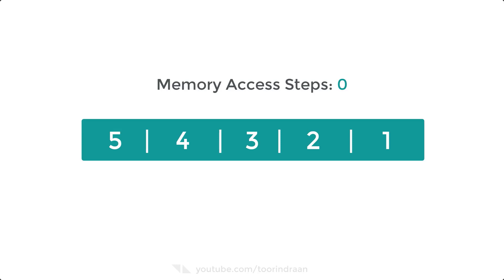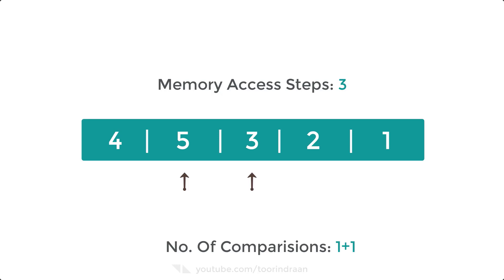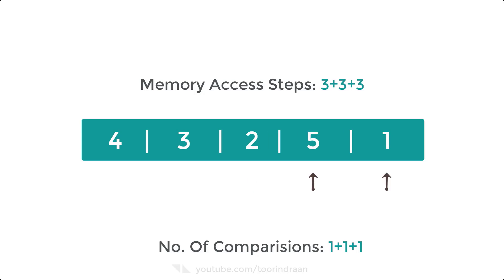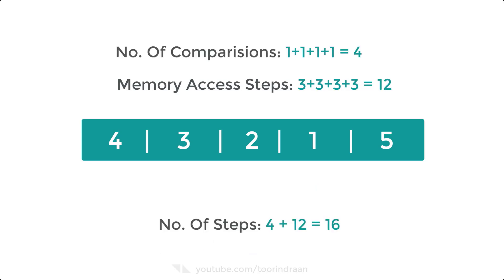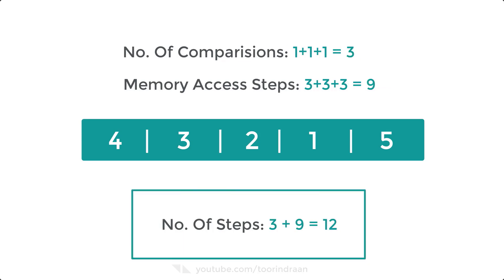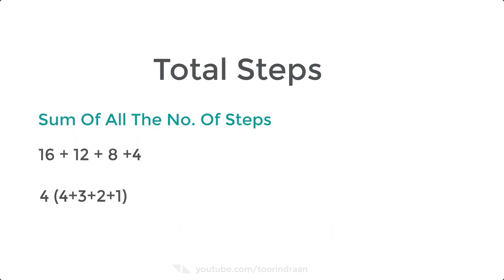5 is stored in temp, 4 moves to the place of 5, then 5 moves to the position of 4 — so total memory access steps are 3. Comparing 5 with 3, 5 with 2, and 5 with 1 each give the same result. The total steps for the first pass are 16. With the largest element in place, we focus on the second largest. The second pass requires 12 steps, the third pass 8 steps, and the last pass 4 steps.